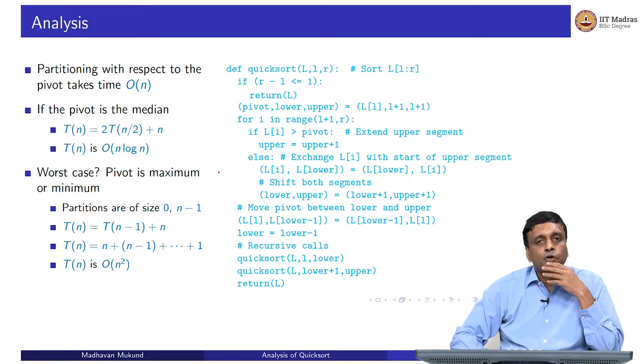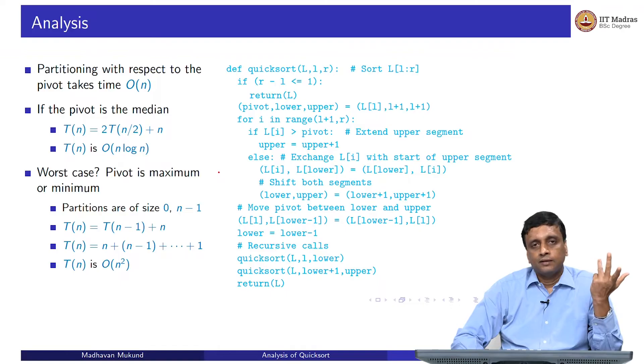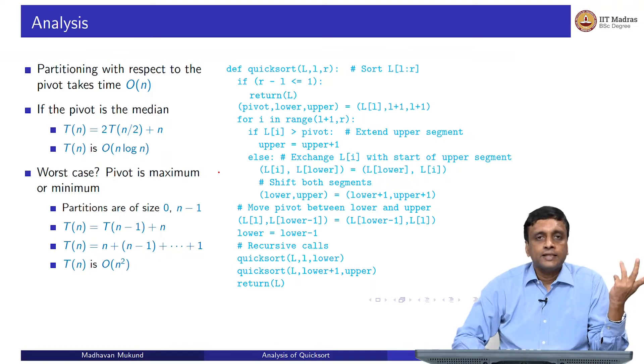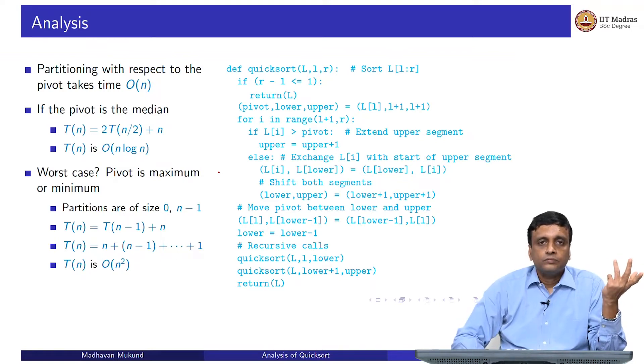In the worst case, because you have no control over the pivot - you are just picking it up without analyzing the values - it is either the smallest or the largest value. If it is the smallest or the largest value, every other value will be either smaller than it or bigger than it.